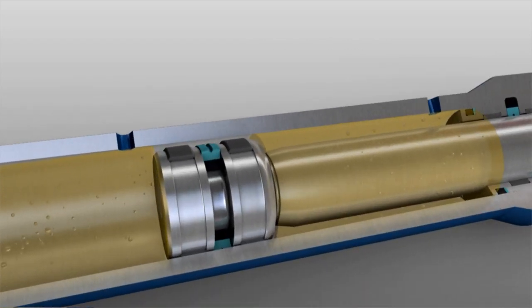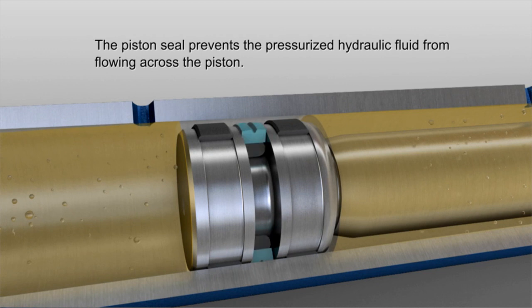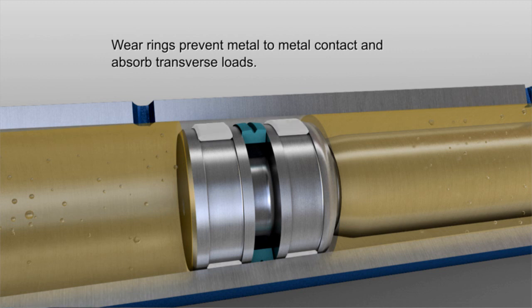The piston seal prevents fluid in the cylinder from flowing across the piston, while wear rings prevent metal-to-metal contact and absorb transverse loads.